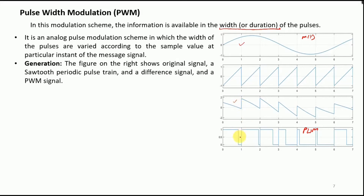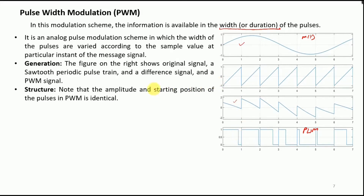In the PWM signal, the amplitude is consistent and does not vary. The starting position begins at the start of each sampling period T_S. For other applications, the start time may be delayed so the pulse width is centered rather than left-aligned. In short, amplitude and position remain the same, while width is varied with respect to the message signal.